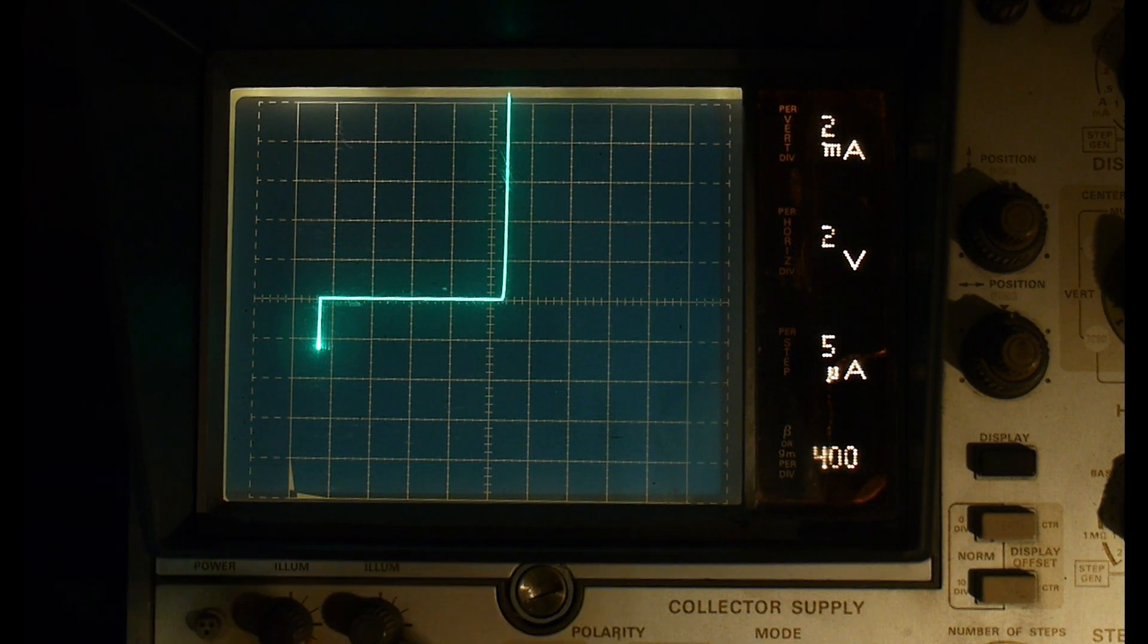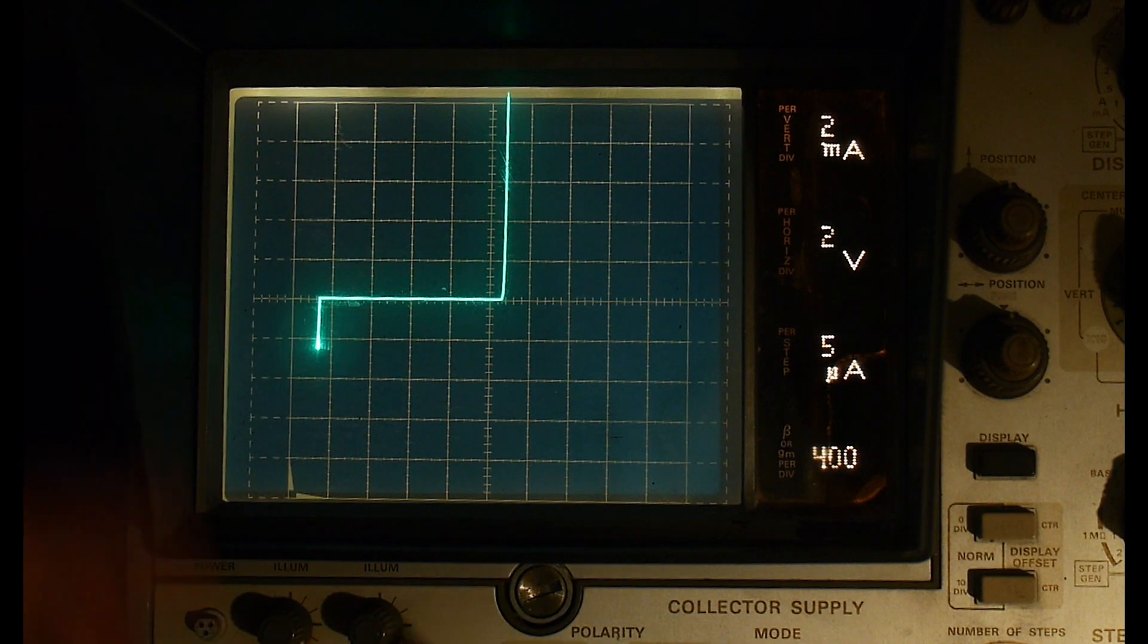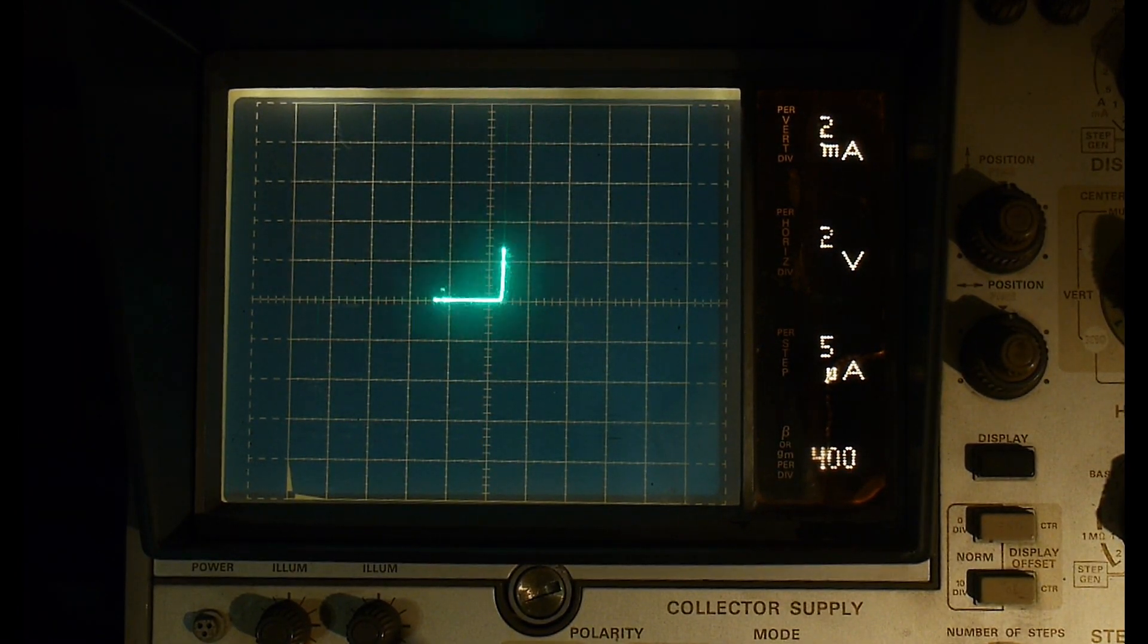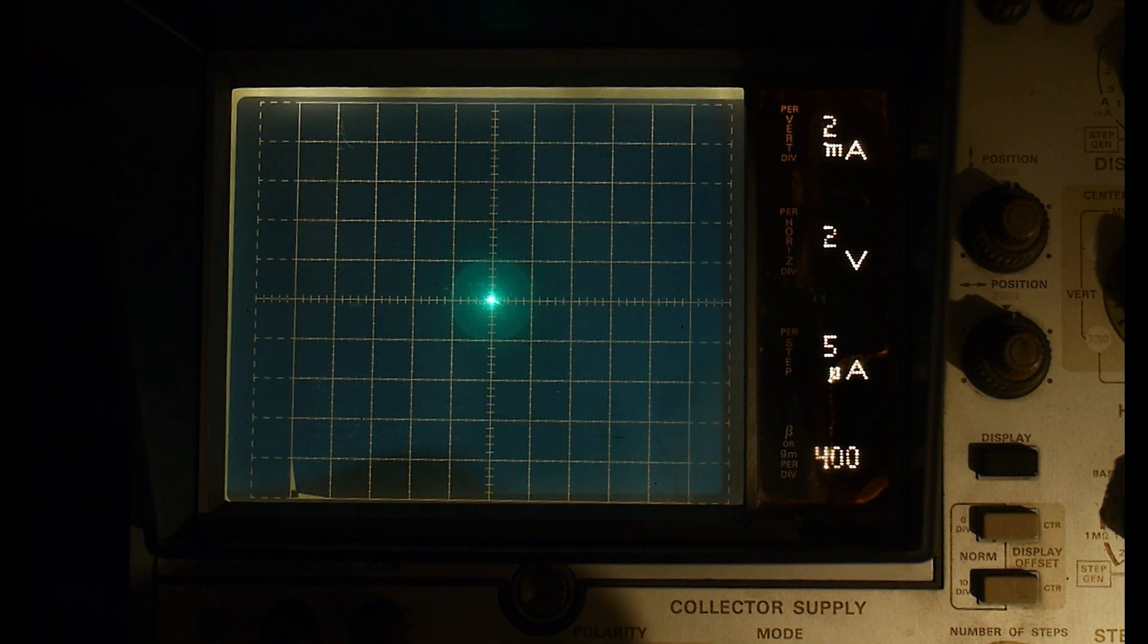And again, it was 2, 4, 6, 8. Yeah, this is supposed to be an 8.7 volt Zener, so it looks like it's perfect. All right, now let's put in that Russian one.